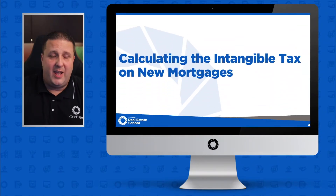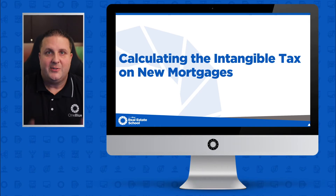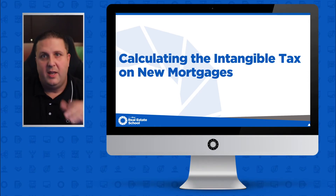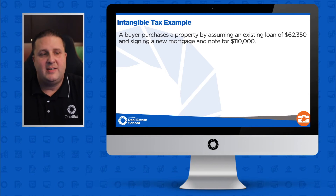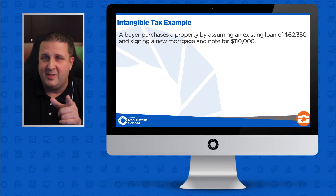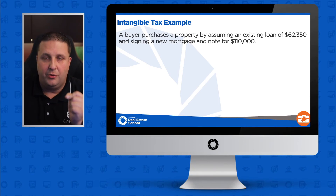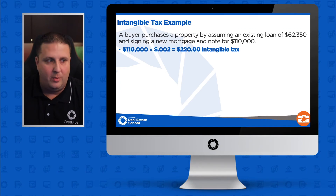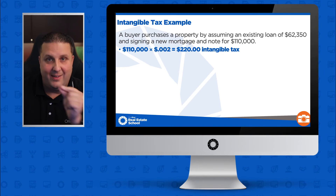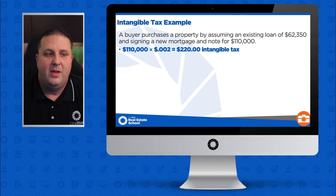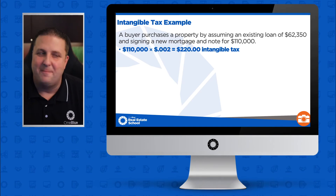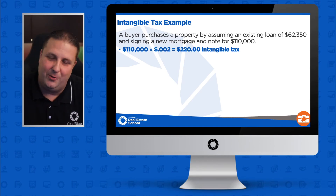Now here's the last one — the intangible tax. Pay special attention. A buyer purchases a property by assuming an existing loan of $62,350 and signing a new mortgage loan for $110,000. Here's the formula — and it's actually simpler than the previous two. Take the new mortgage amount of $110,000, multiply by 0.002, and you get $220. That's it. The intangible tax only applies to new mortgages. New mortgage times 0.002 equals your answer. Don't overcomplicate it.